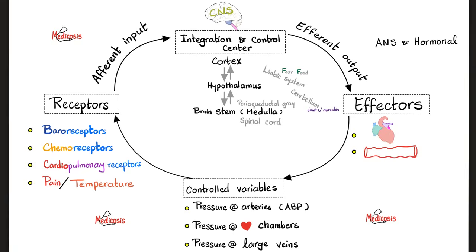I like to start with the big picture. You have all kinds of receptors throughout the body: baroreceptors that feel pressure, chemoreceptors that sense chemicals, cardiopulmonary receptors in the heart and the lungs, as well as pain and temperature receptors — nociceptors and thermoreceptors, respectively. All of these receptors send different impulses to the central nervous system via afferent input.